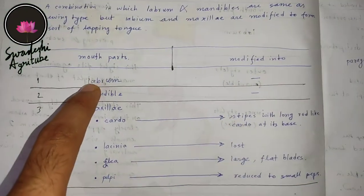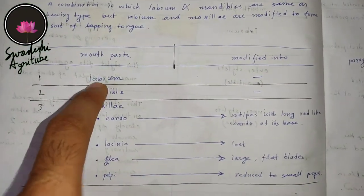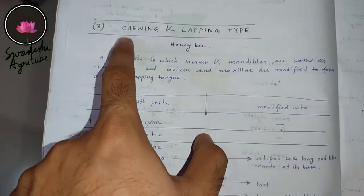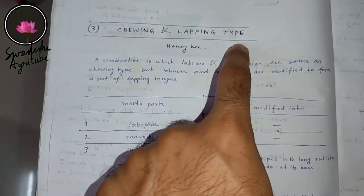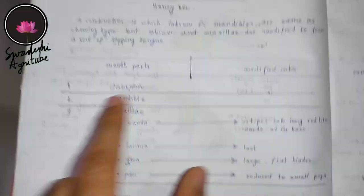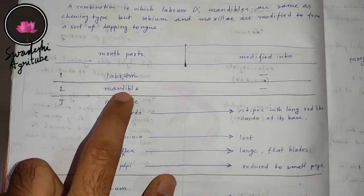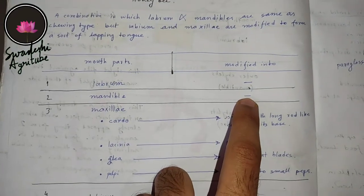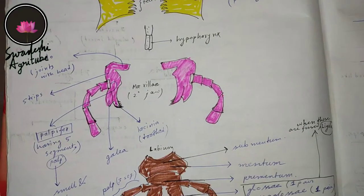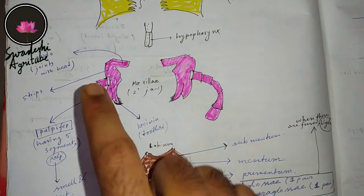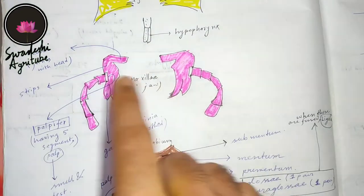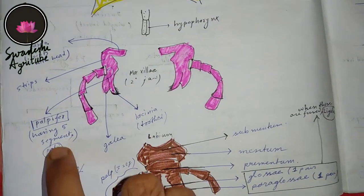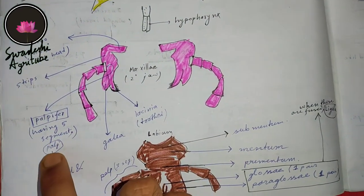First of all, you can see that labrum is not modified in chewing and lapping type of mouth parts. Talking about mandible, it is also not modified.